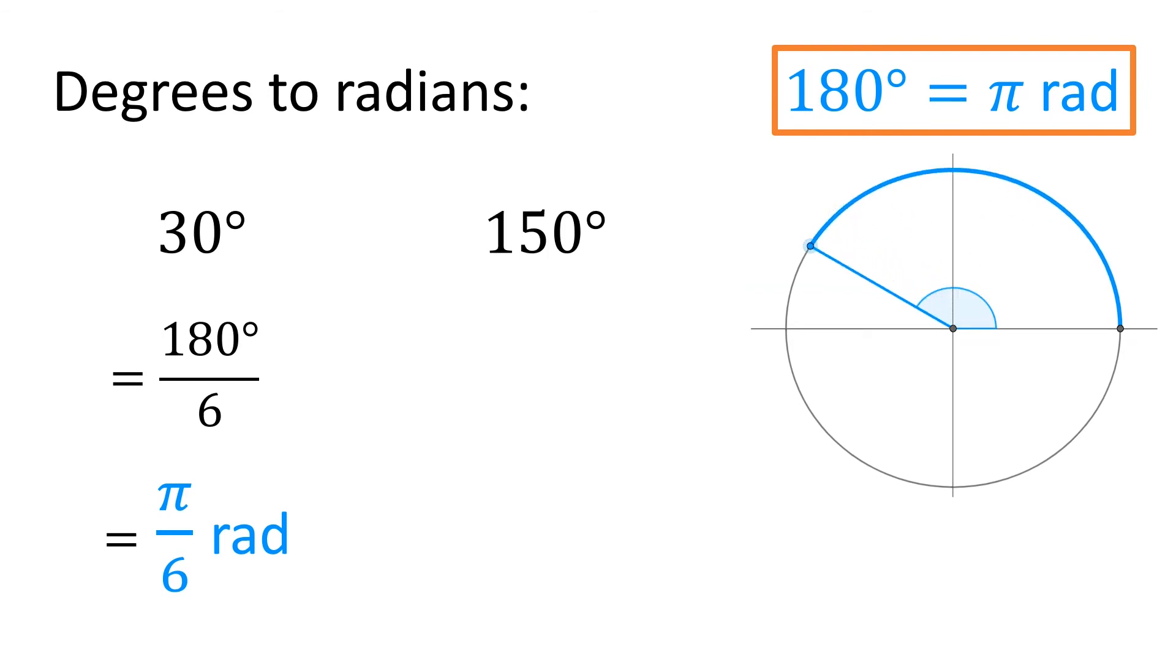150 degrees would be 5 times 30, that's 5π/6 radians.